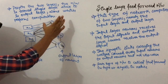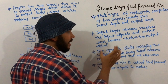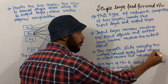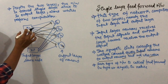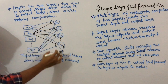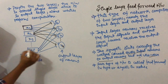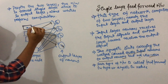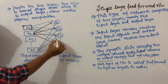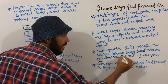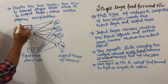The synaptic links carrying the weight connect every input neuron to every output neuron, but not vice versa. For example, the first neuron in the input layer will have synaptic weights from x1 to y1, x1 to y2, x1 to y3, and so on. This means every input neuron is connected to every output neuron.